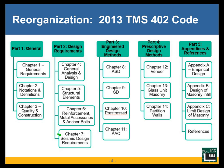Chapter seven is seismic design requirements. Then we have the engineered design methods — chapter eight is allowable stress design. If you take everything that was in chapter two and just change the two to eight, pretty much everything is the same. We didn't really make any major changes to the organization of allowable stress design. The three basic parts of chapter eight: 8.1 is overall general requirements, 8.2 is unreinforced masonry design, and 8.3 is reinforced masonry design — that's primarily where we'll spend our time today.